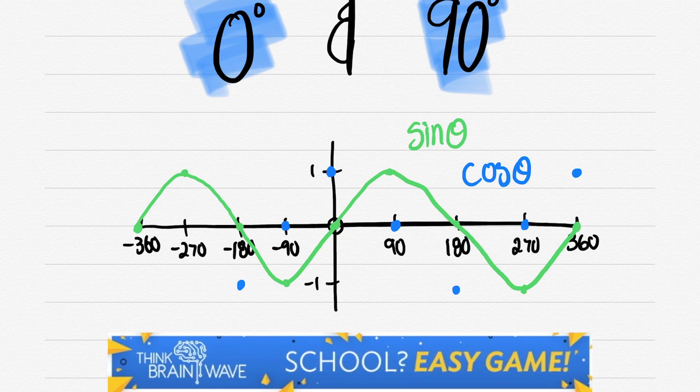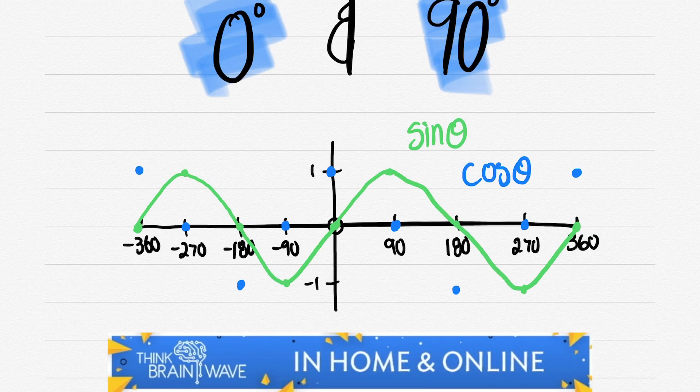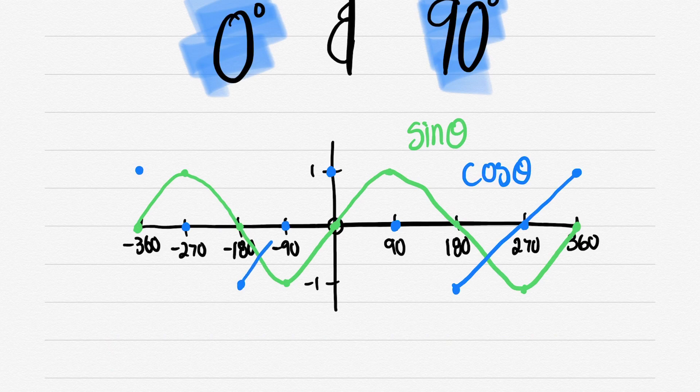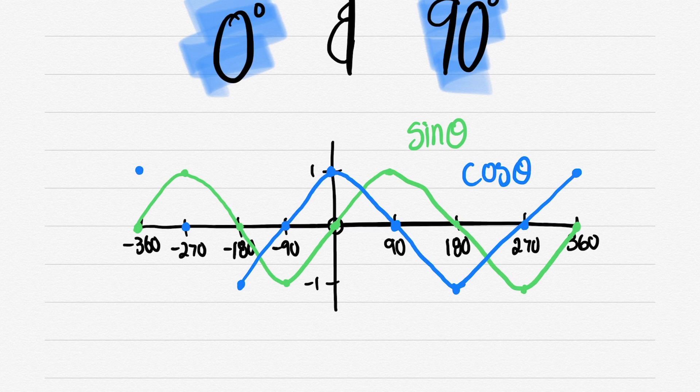We say cos -90° is 0, cos -180° is -1, cos -270° is 0, and of course cos -360° is 1. Now let's look at this. If we draw this together, what do you think we're going to see?